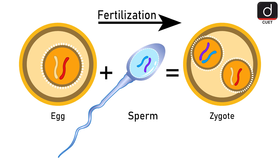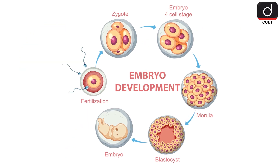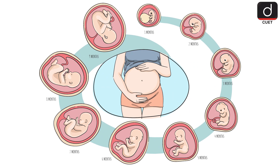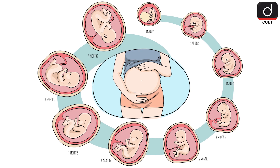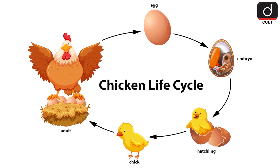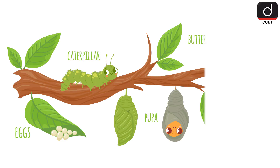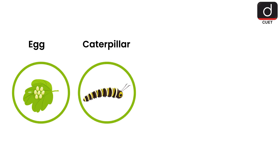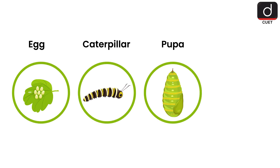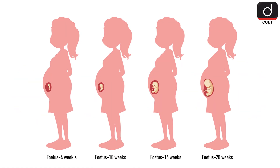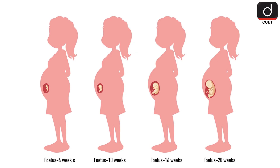After fertilization, the zygote begins to divide and grow, eventually developing into a fully formed organism. In many animals, this development happens inside the mother's body, but in others, like birds, it happens inside an egg. Think of a caterpillar turning into a butterfly — it starts as a tiny egg, grows into a caterpillar, then goes through a transformation to become a beautiful butterfly. In humans, the baby grows inside the mother until it's ready to be born.